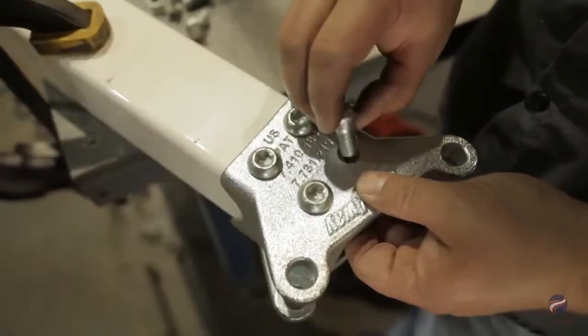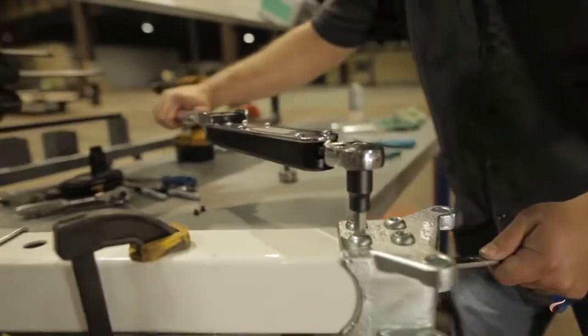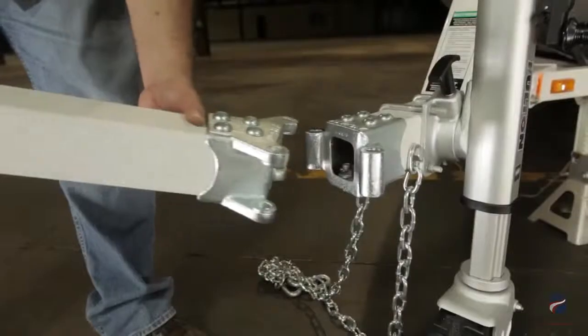Place the remaining casting over the swing tongue and attach in the same manner as previously described. Be sure castings are orientated correctly.